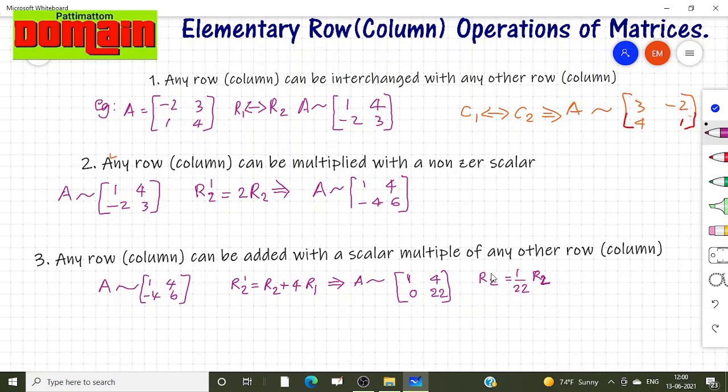Suppose existing R2 second row is [0, 22]. It is multiplied with 1/22. We get a new equivalent matrix like this. [1, 4; 0, 1] right.